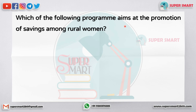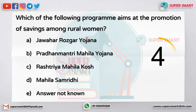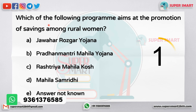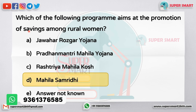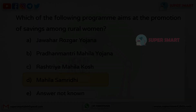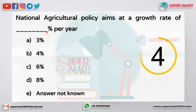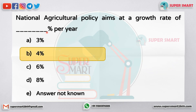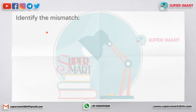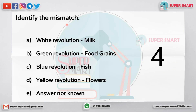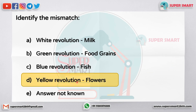Which of the following programs aimed at the promotion of saving among rural women? The agricultural policy aims at a growth rate of 4% per year. Identify the mismatch — the answer is that the Hello Revolution has flaws.